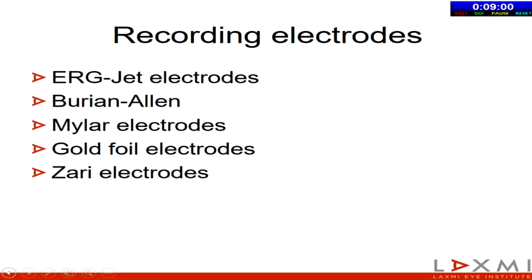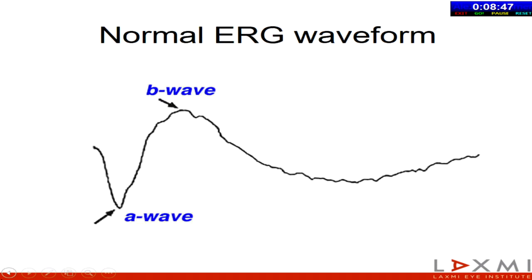There are different electrodes — these are important from exam purposes. There are various modifications including the use of Zari to record the ERG. Now for more practical aspects: this is a normal ERG waveform. The initial wave is electronegative — this is assumed to be the resting potential. The first wave is electronegative, called the A wave, after which the wave starts rising, goes beyond the initial point and becomes an electropositive wave called the B wave.